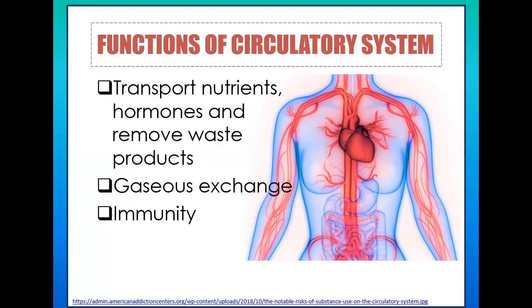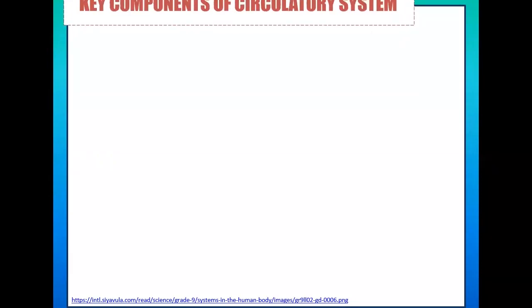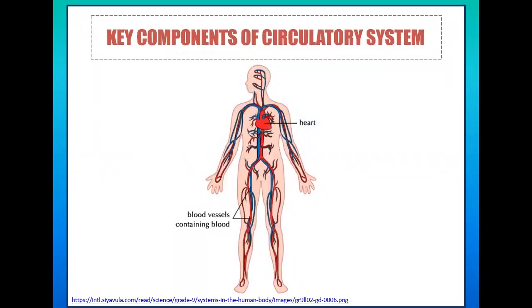These functions will be further explored once we start discussing the key components of the human circulatory system. So what are the key components? According to this illustration, the key components of the circulatory system are the heart, blood vessels, and blood.